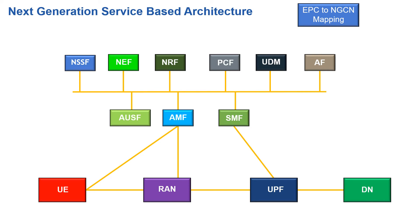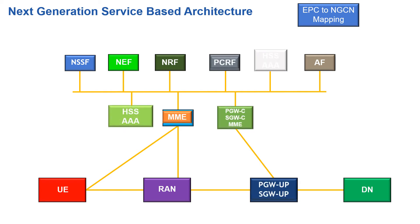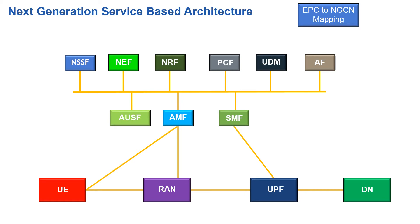Now let's look at the next generation service-based architecture. In the lower left-hand corner we have the UE, or user element — typically the mobile device. This connects up to the radio access network, and in a complete standalone 5G network this could be the gNodeB, or next generation Node B. Moving across from the radio access network, we connect up to the UPF, the User Plane Function. The UPF is a hybrid of two devices previously found in the Evolved Packet Core — the packet gateway and the serving gateway — but only from the user plane perspective.